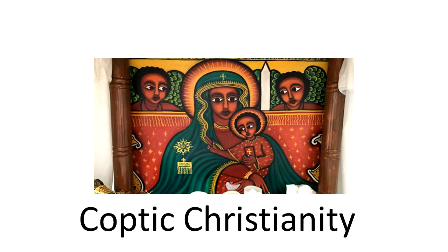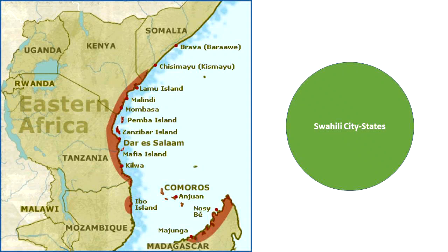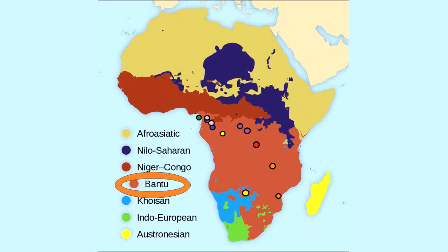By the early 1500s, Ethiopia was a Christian society surrounded by many different Muslim states. Besides Ethiopia, on the eastern coast of the continent, there were also Swahili city-states. The word Swahili means 'people of the coast' and refers to the people living along the East African coast and the nearby islands. The people living in these territories were speakers of the African language Bantu.